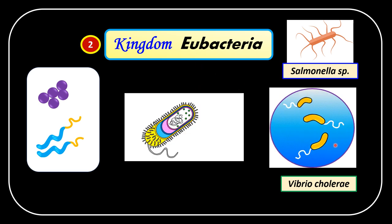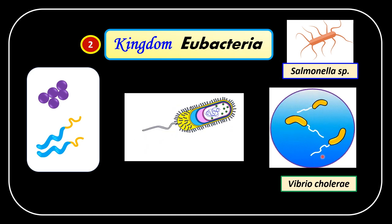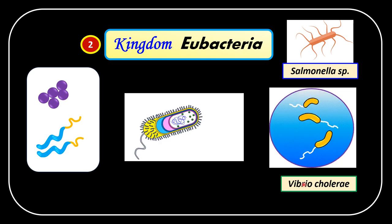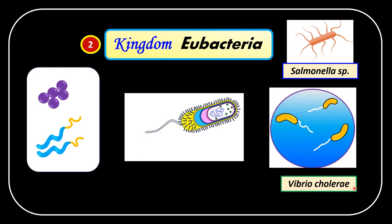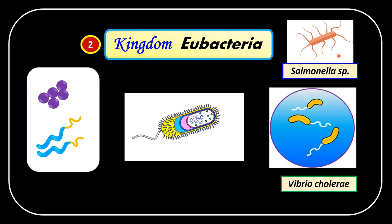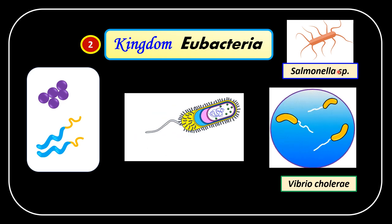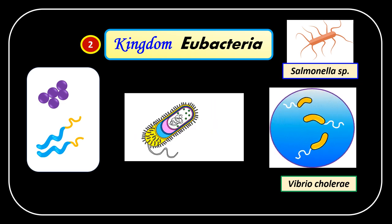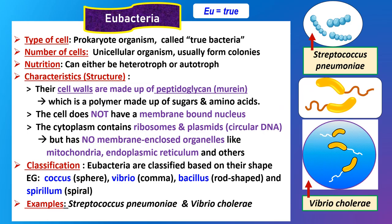Vibrio cholerae is shaped like a comma and has a flagellum to enable movement. Vibrio refers to the shape, and cholerae is the disease it causes — a very dangerous bacteria. Salmonella species is another type of bacteria that can cause food poisoning. The second kingdom we're going to discuss is Kingdom Eubacteria. The word 'eu' means true, so eubacteria means true bacteria, as compared to archaebacteria which are called primitive bacteria.